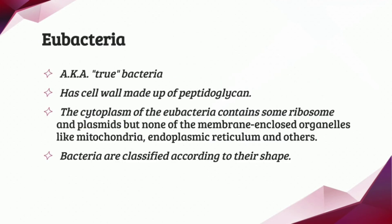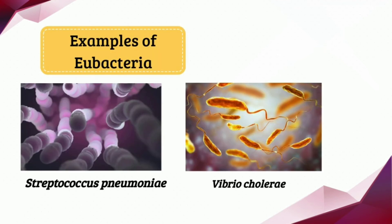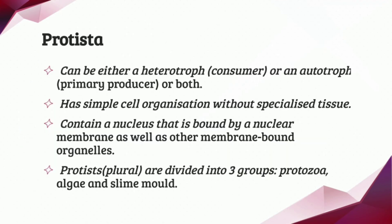Next, we have the Eubacteria kingdom, also known as true bacteria. This bacteria has a cell wall made up of peptidoglycan. The cytoplasm of eubacteria contains ribosomes and plasmids but none of the membrane-bound organelles like mitochondria or endoplasmic reticulum. These bacteria are classified according to their shape. Examples of eubacteria are Streptococcus pneumoniae and Vibrio cholerae.